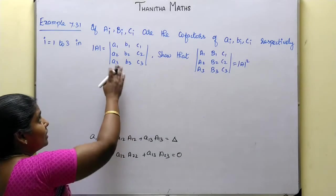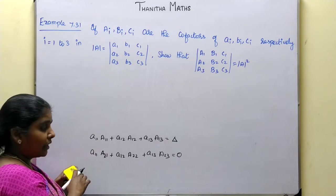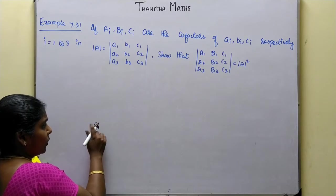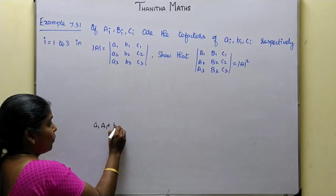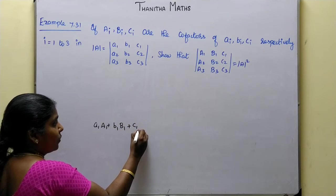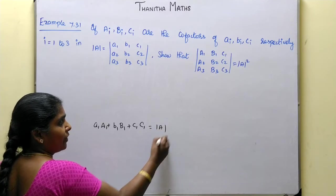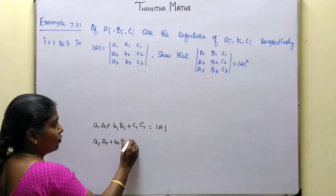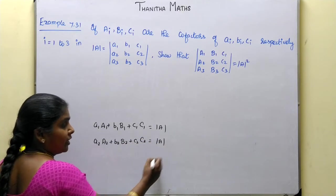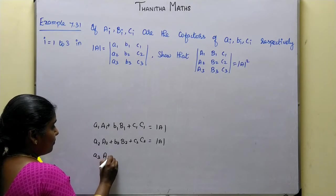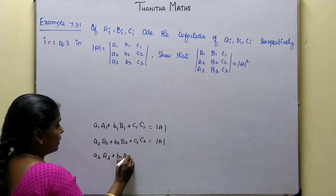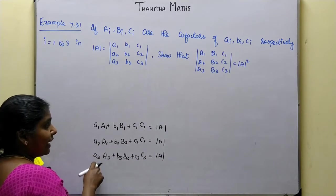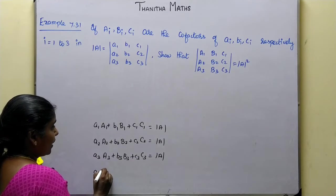Now, A11, A12... A1, B1, C1. The cofactors format: A1 is the cofactor A1, B1 is the cofactor B1, C1 is the cofactor C1. The elements of A: A2 is A2, B2 is B2, C2 is C2.